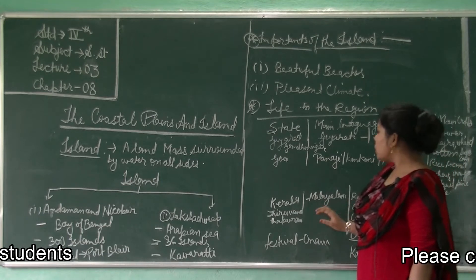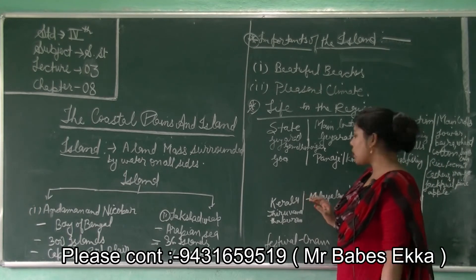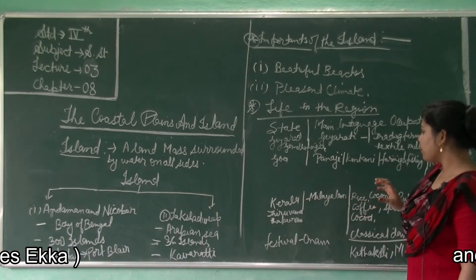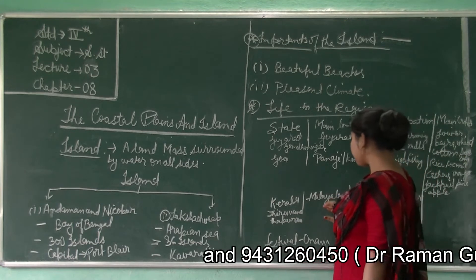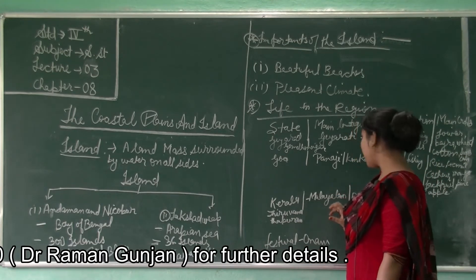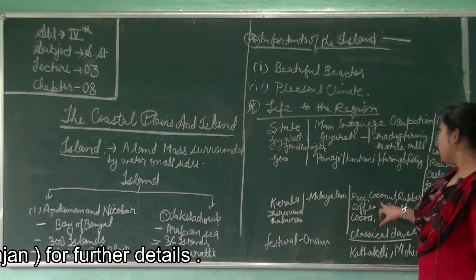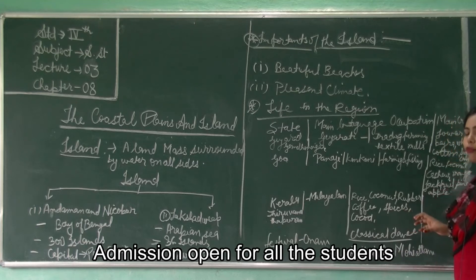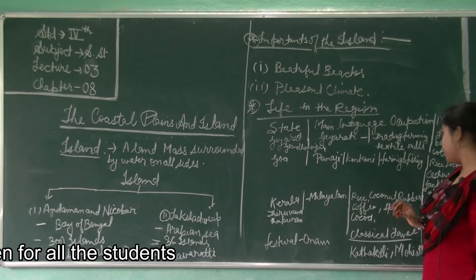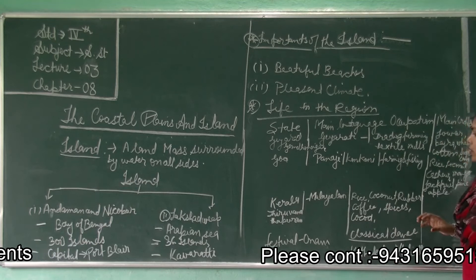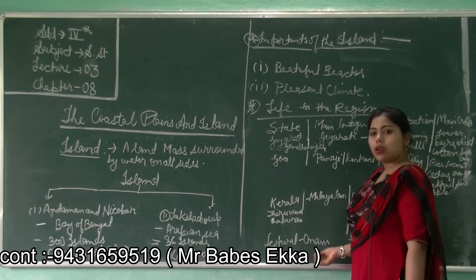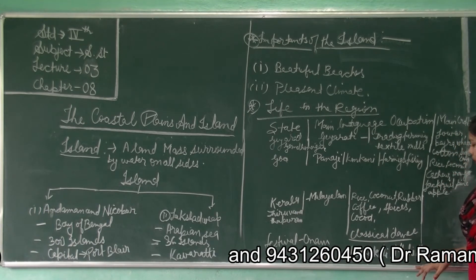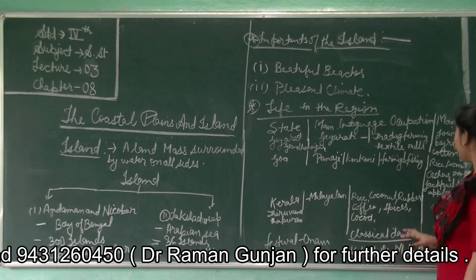Kerala also lies in the coastal plains. The capital of Kerala is Thiruvananthapuram and the language spoken here is Malayalam. The crops grown here are rice, coconut, rubber, coffee, spices, and cocoa. The beautiful festival of Kerala is Onam, and the classical dances are Kathakali and Mohiniyattam.